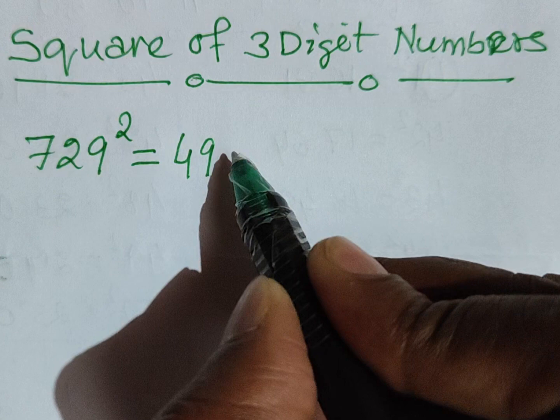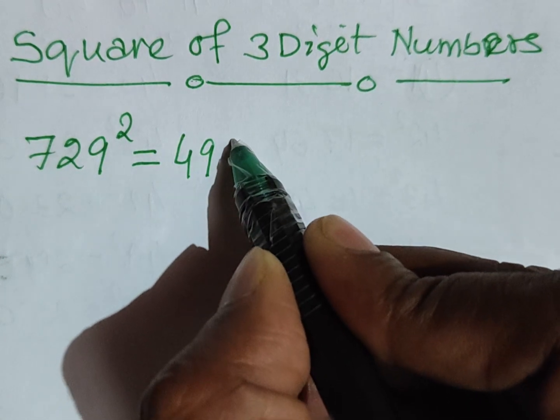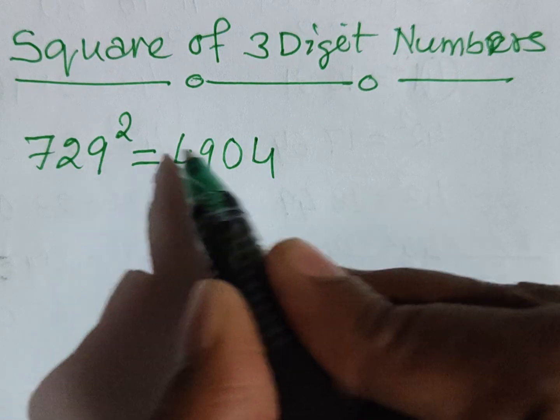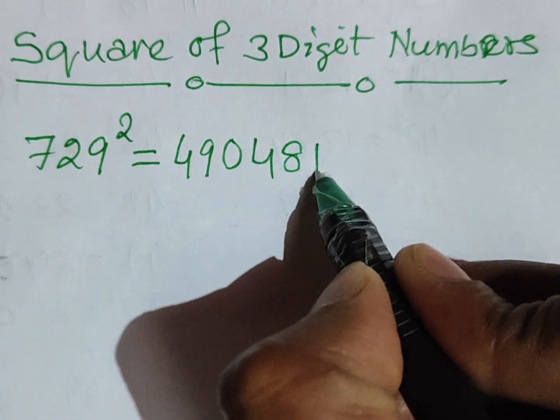So we can take help of 0. That means we can write 04. Then square of 9 is 81. This is the first step.